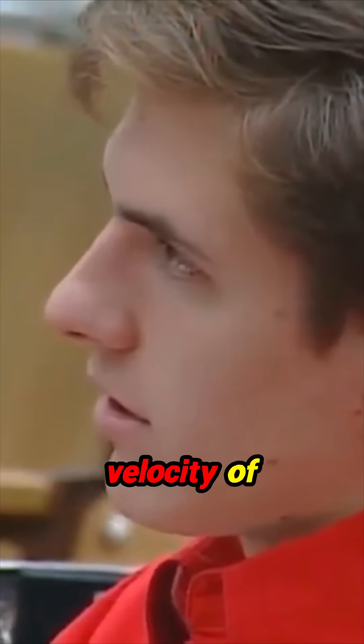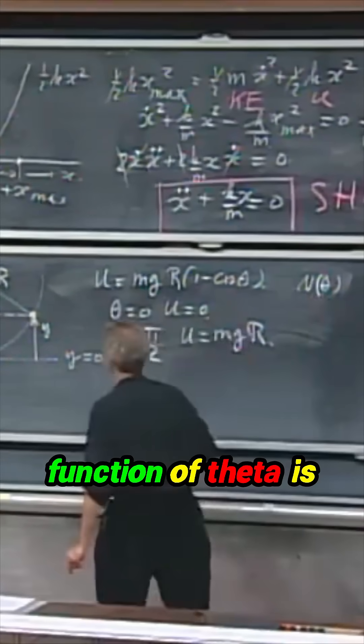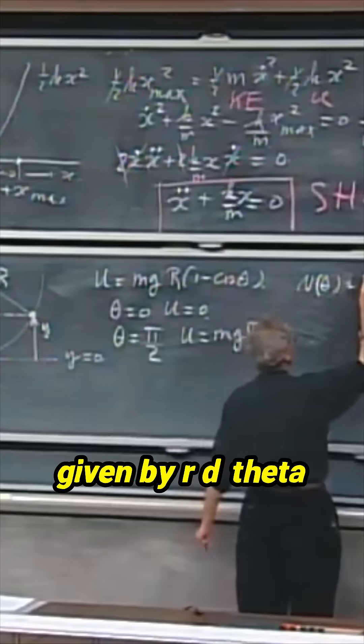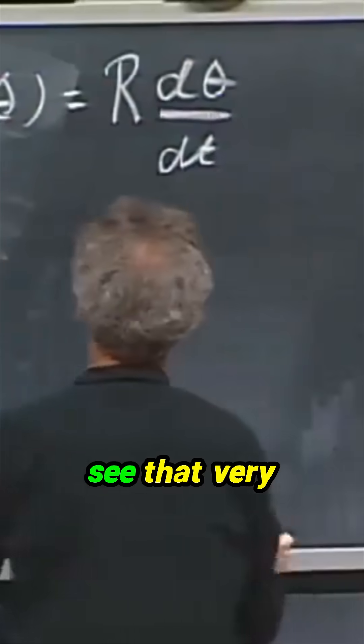The velocity of that object as a function of theta is given by r d theta dt. And I can make you see that very easily.